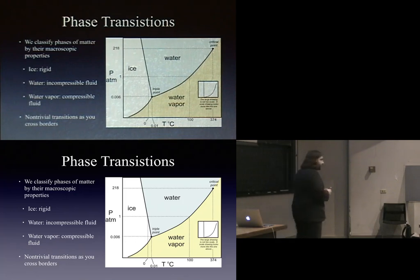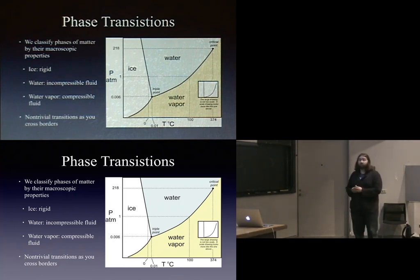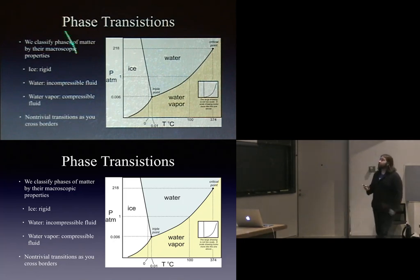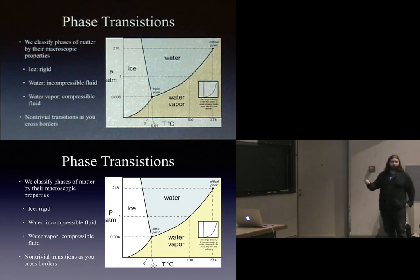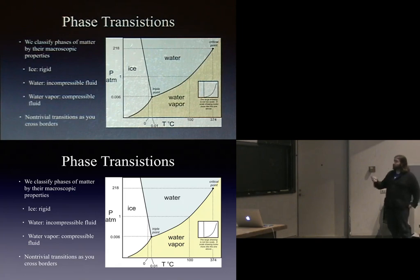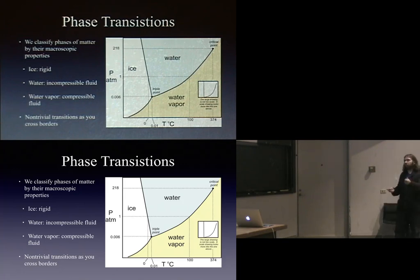One of the ways we think about this problem is something you might remember from chemistry class: the notion of phases of matter and phase transitions. This is the phase diagram for water — the temperature axis and the pressure axis. You know that if you get water cold enough, it freezes into ice; if you heat it up, it becomes water and then eventually boils. At one atmosphere: ice, water, gas. These things look very different if you just look locally at them.